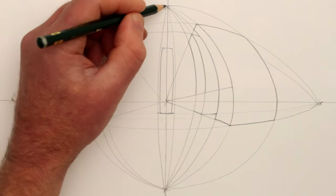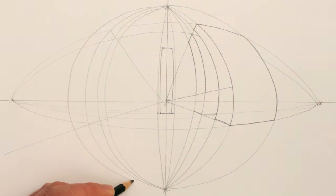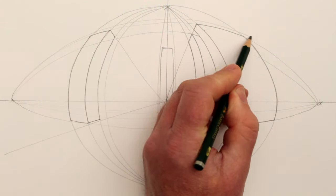In five-point perspective the guidelines will make a pattern a bit like an onion cut in half. I'll speed this drawing up now so that you can see how the drawing develops over time.